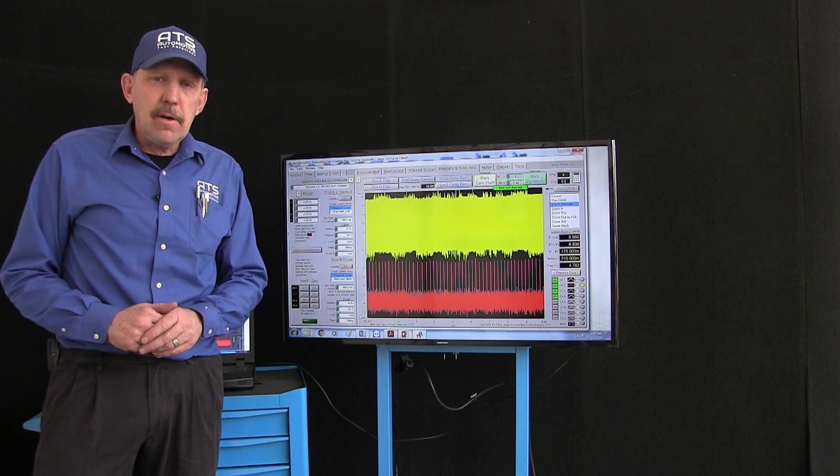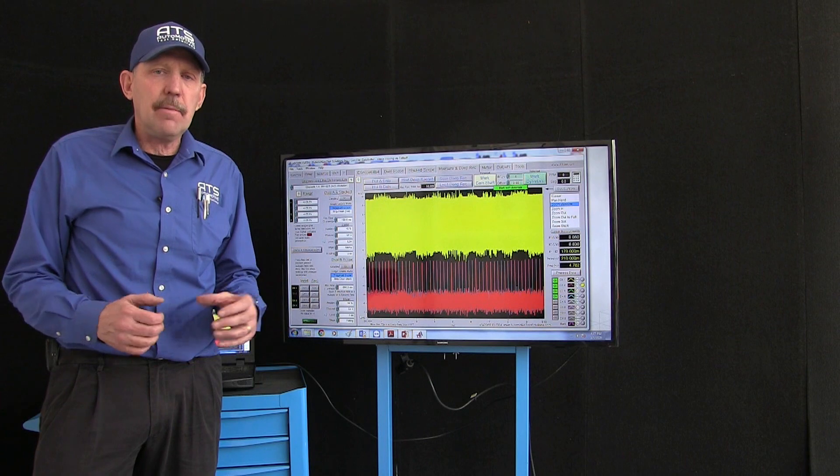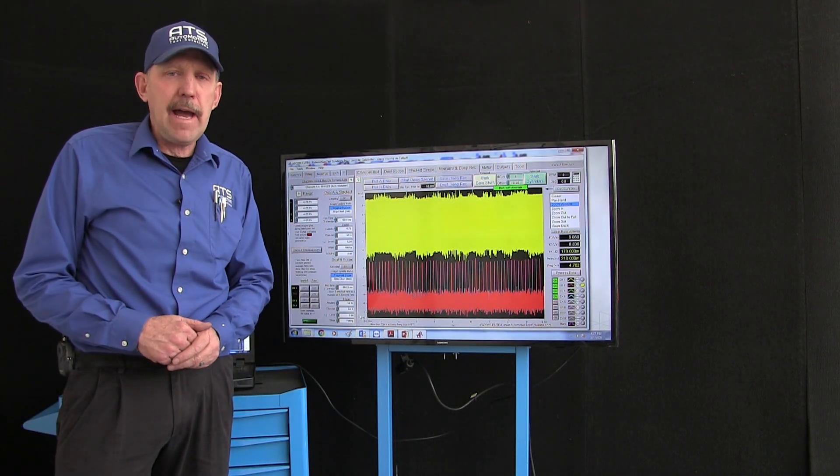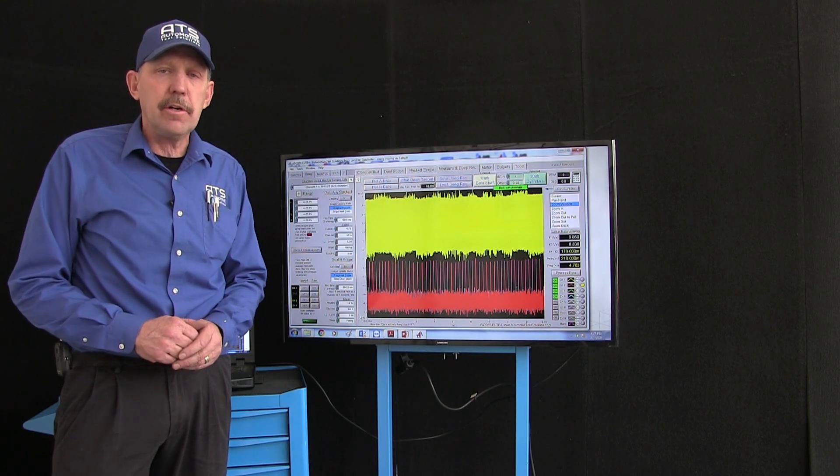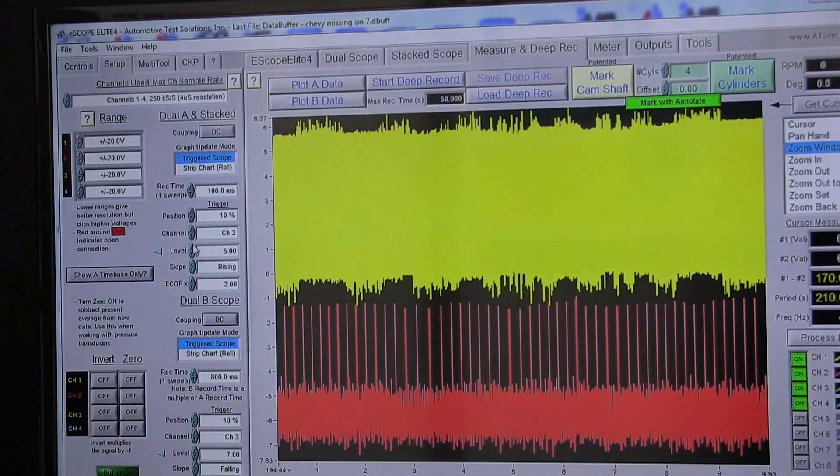What you're going to need to do is have an input from the crankshaft sensor and some sync trigger. In this case we're using the coil command to turn on and off the coil for cylinder number one. Let's decompress this data where we can see what's going on with it.